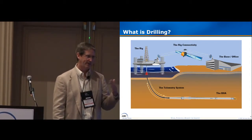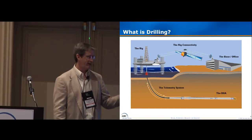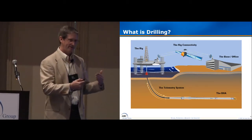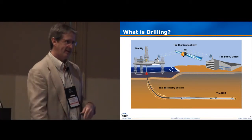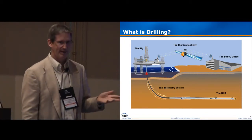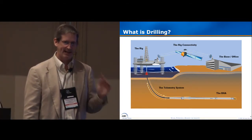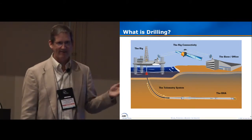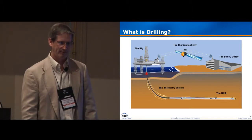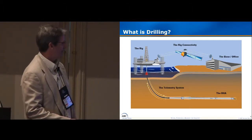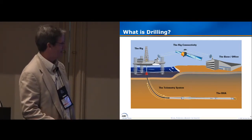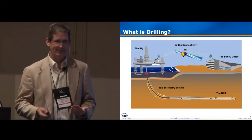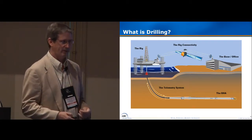Mud pulse communication is not electronic at all — it actually sets up a carrier wave in the mud and varies the phase of the vibration. We pick that up at the surface, and you only get about 12 bits per second at the high end. When you're five miles out, you're maybe at half a bit per second. If you're communicating from the rig down, you're really communicating at a rate of bits per minute — so it's very, very slow.